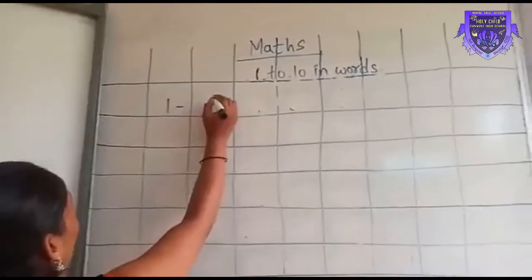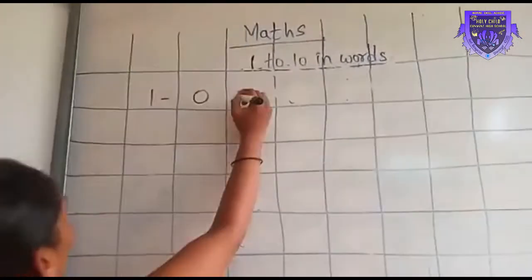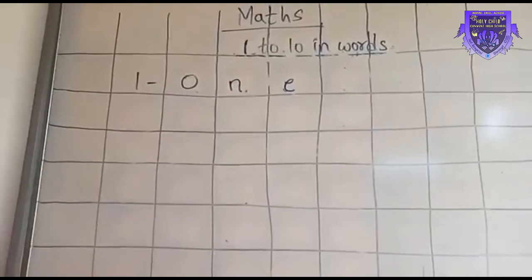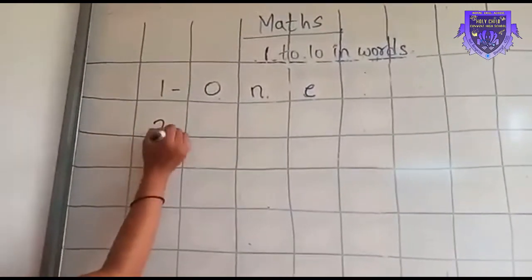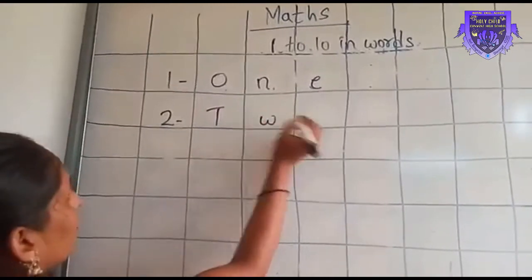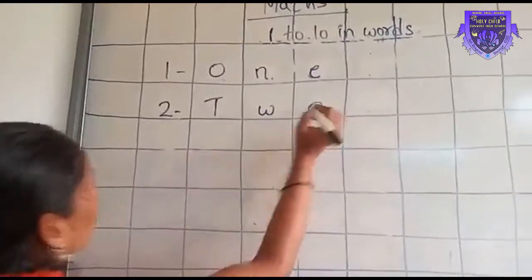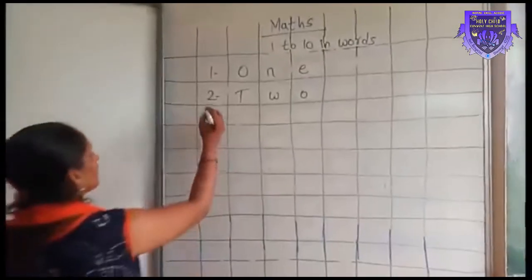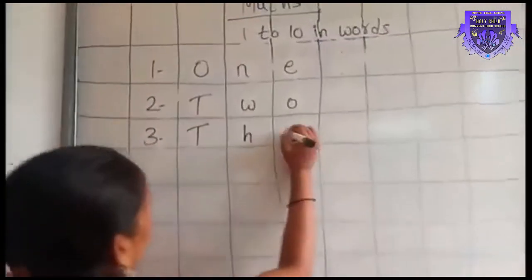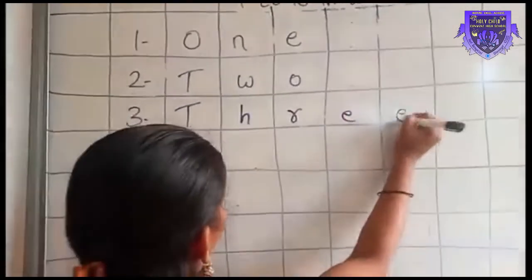Write number 1. So the spelling of 1 is O-N-E, one. Then number 2: T-W-O, two. Number 3: T-H-R-E-E, three.